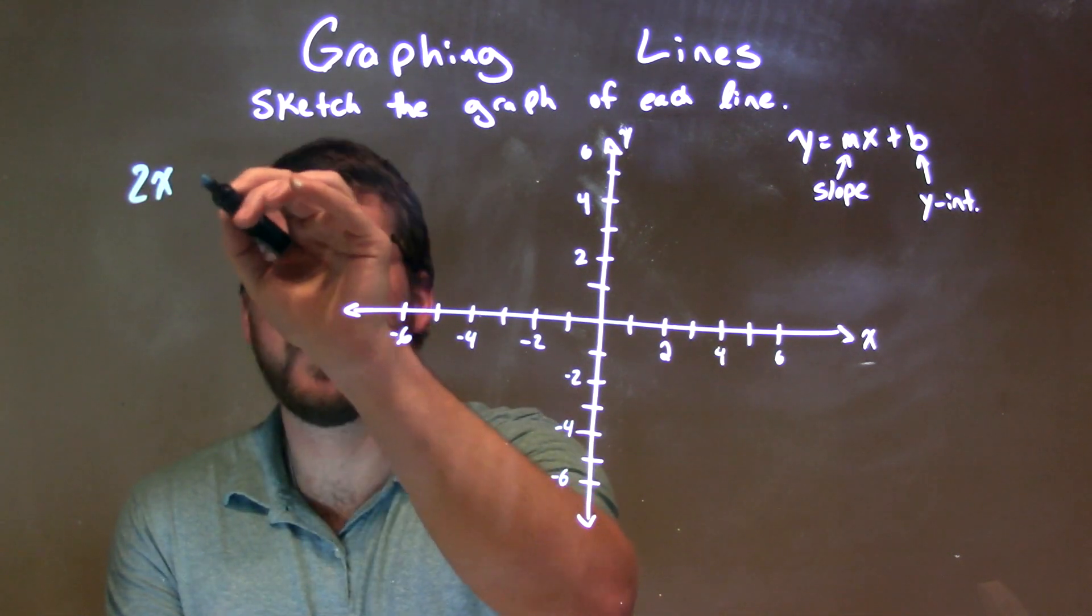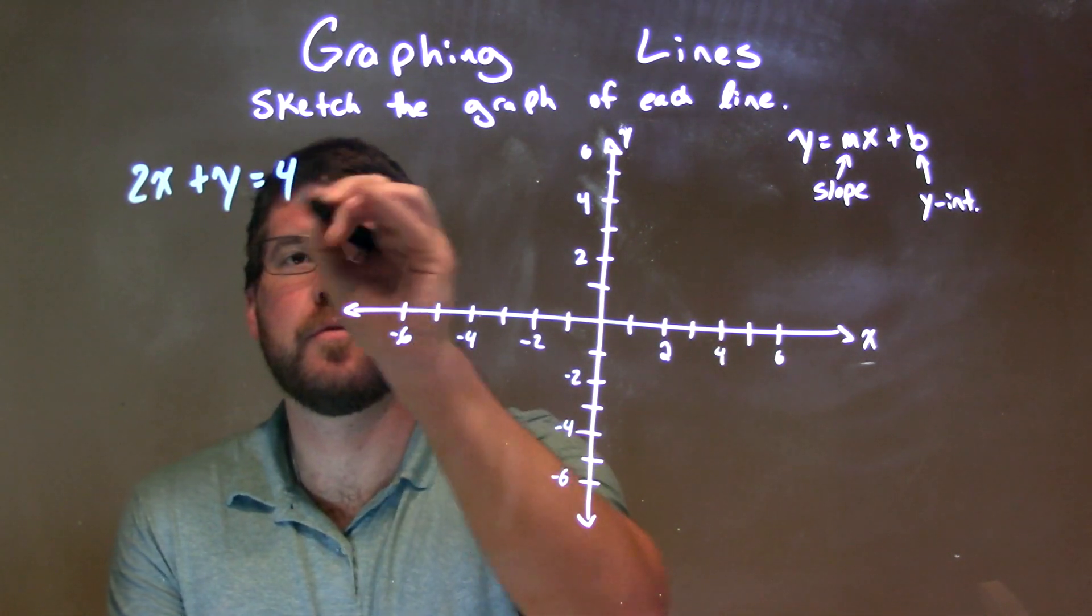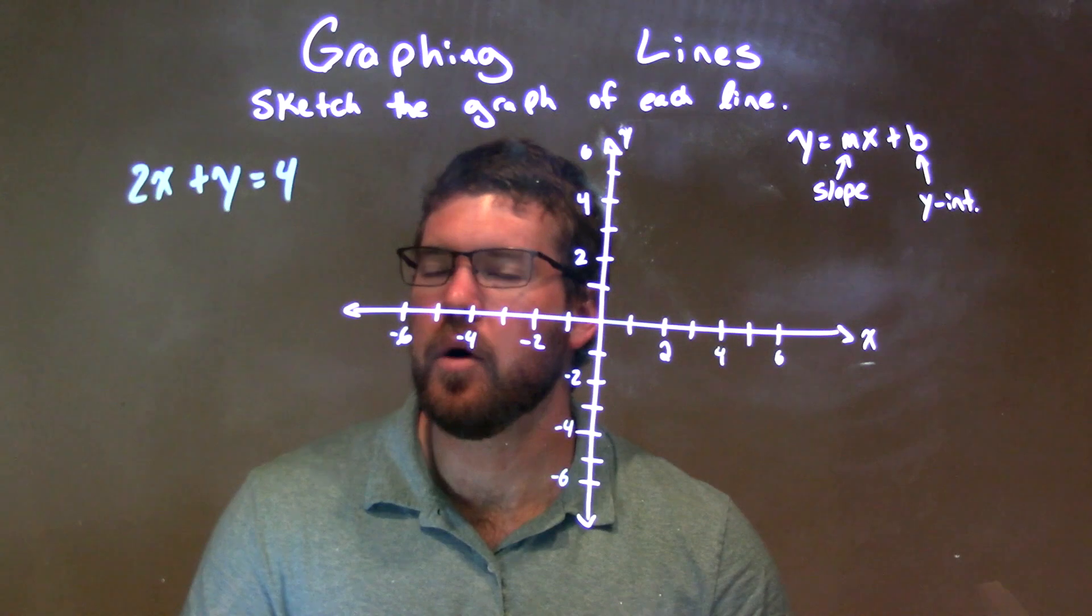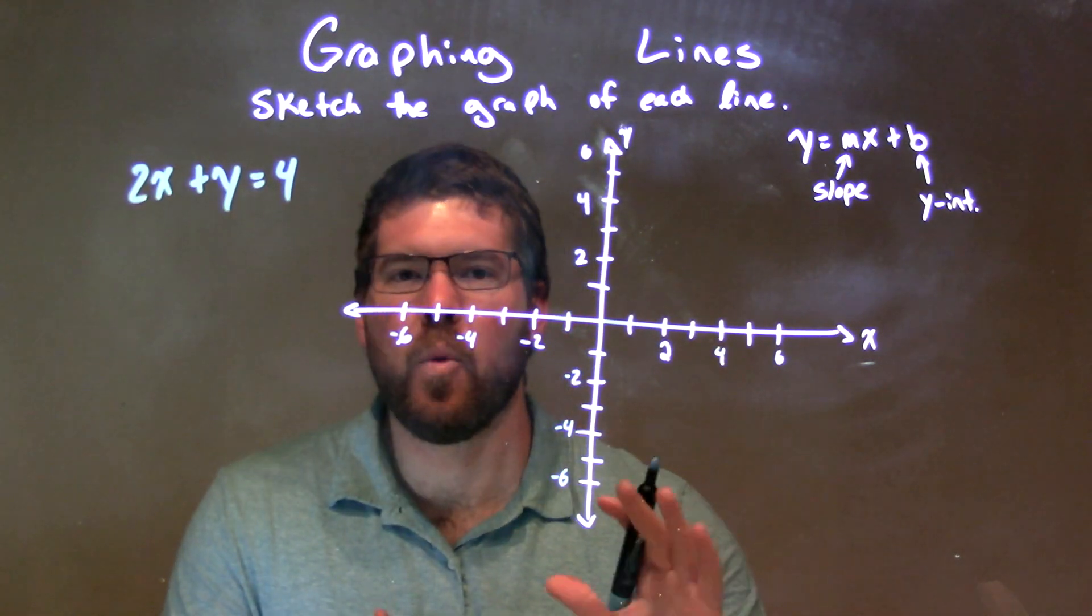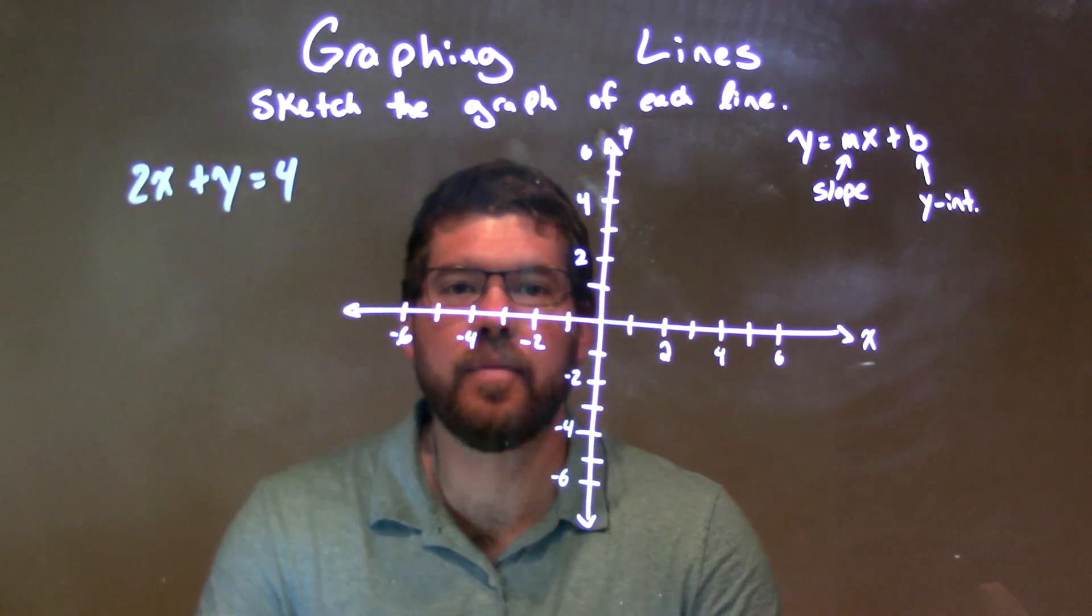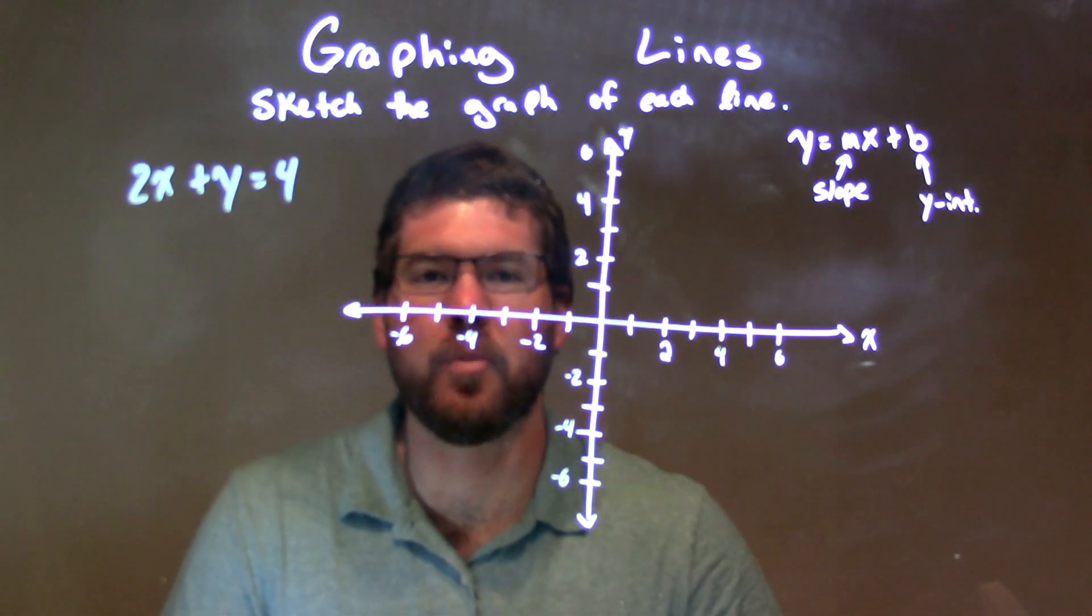2x plus y equals 4. What I need to do now is to get y by itself. This is in standard form, and I like to see it in slope-intercept form.